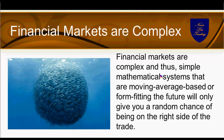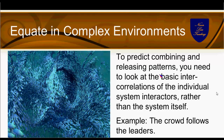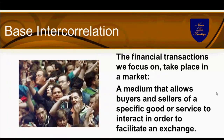Financial markets are a complex ecosystem. When markets are complex, using simple math like moving-average-based tools or form-fitting models like Elliott Wave — developed in 1934 — gives us only a random chance of being on the right side of a trade. We need to be able to predict the systems into the future and see when they break out. Like a school of fish, we need to see where it's going to break out to and predict that pattern from the outside.